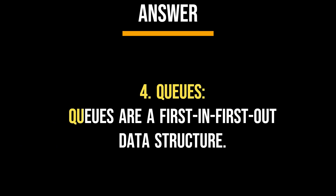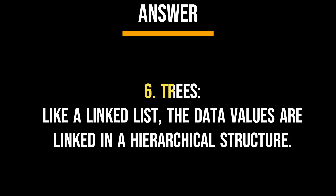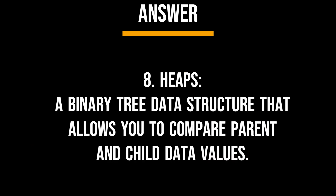4. Queues — a first in first out data structure. 5. Graphs — in this data structure, data values are stored in nodes connected by edges. 6. Trees — like a linked list, the data values are linked in a hierarchical structure. 7. Hash table — a table in which each value is assigned a key and then preserved, making individual values more accessible. 8. Heaps — a binary tree data structure that allows you to compare parent nodes.